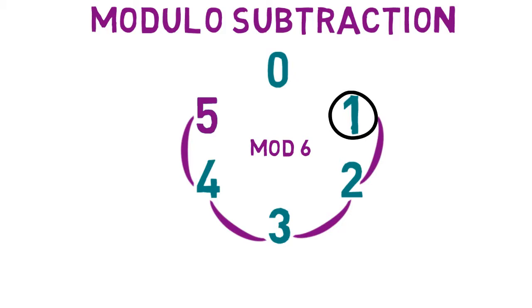For example, in modulo 6, 5 minus 4 equals 1, just as in regular subtraction.